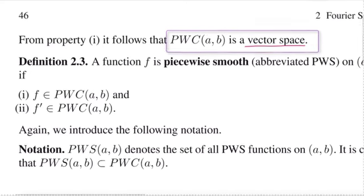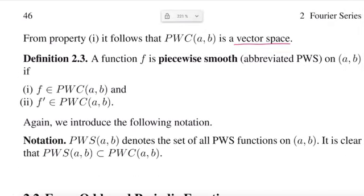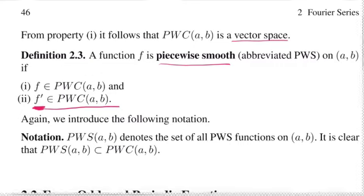We can carry this a little bit further by introducing piecewise smooth. Piecewise smooth means that also the derivative is piecewise continuous. So not only the function like in item 1, but also its derivative is piecewise continuous. So that's a little bit stronger than piecewise continuous. For now, though, we should just focus on PWC, piecewise continuous functions.